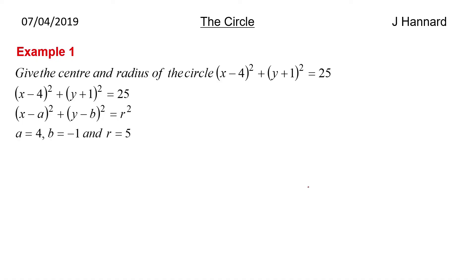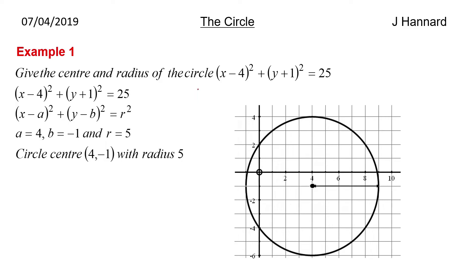Our B must be minus 1 because it's Y minus B and we've got plus 1 — so how do we make minus B equal plus 1? We make B equal minus 1. And R must be 5 because the square root of 25 is 5 — remember that 25 is R squared, not R. That is a very common misconception, make sure you understand that going into the exam. So we've got the centre of the circle being (4, minus 1) and a radius of 5. You can see the centre of the circle is at 4, minus 1 and the radius is 5.